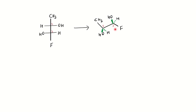Going from priority 1 to 2 to 3, you are going anticlockwise, which means S configuration — so carbon 3 is S. For carbon 2: OH gets first priority, the adjacent carbon chain gets second, and methyl gets third — going 1 to 2 to 3 is again anticlockwise, so carbon 2 is also S. Both carbon 2 and carbon 3 are S configuration. You can verify this against the Fisher structure — if you get SS for both, the flying wedge structure is correct. If you get RS or SR, that corresponds to the meso structure.